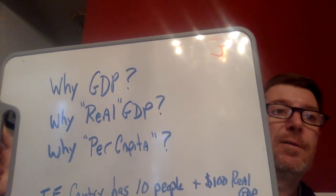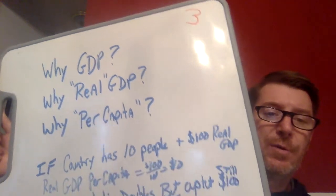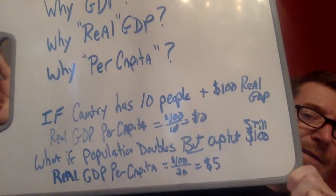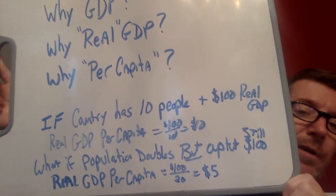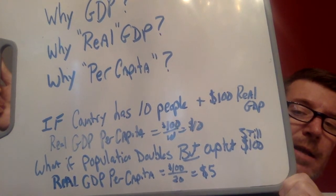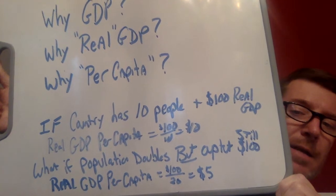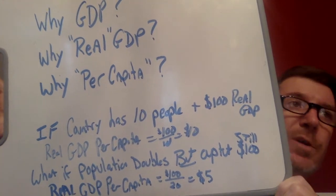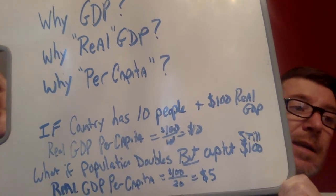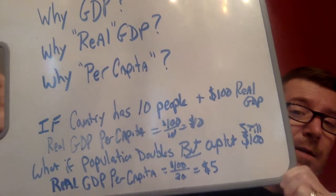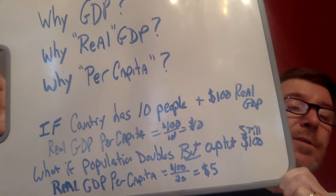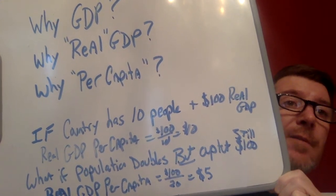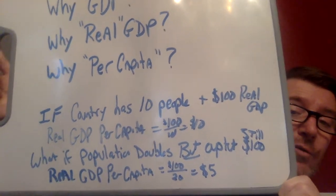Per capita: we need to know how many people are in the country. If a country has 10 people and $100 of real GDP, real GDP per capita is $100 divided by 10 people, which is $10 per person. But if the population doubled to 20 people while output stayed at $100, real GDP per capita drops to $5 per person. Your country is worse off — you've got to constantly grow production to keep up with a growing population or immigration.